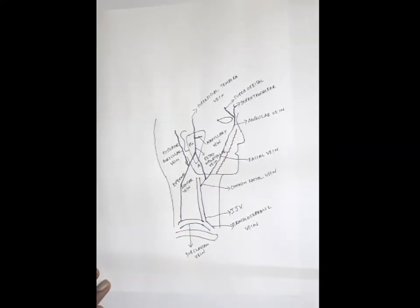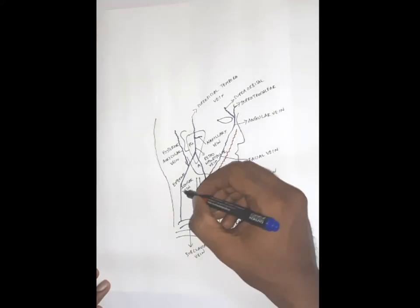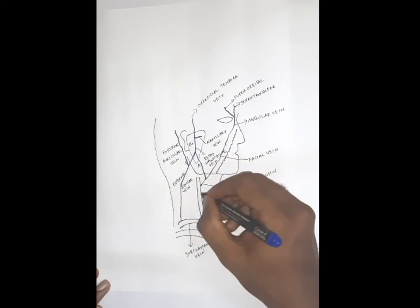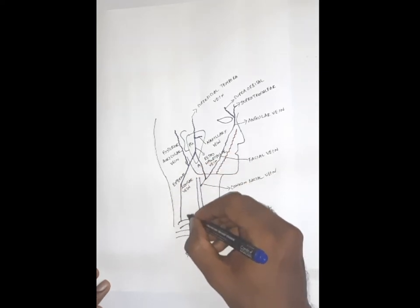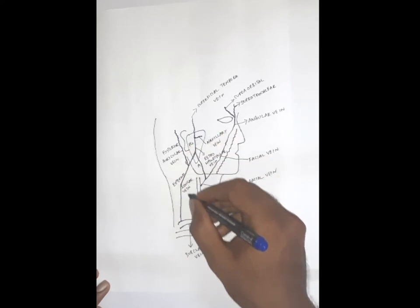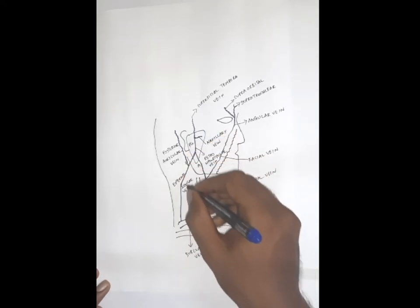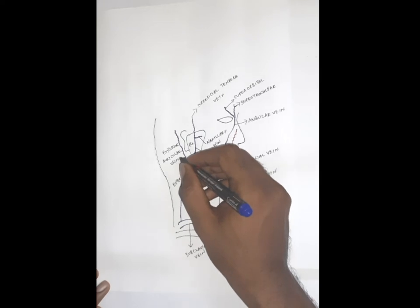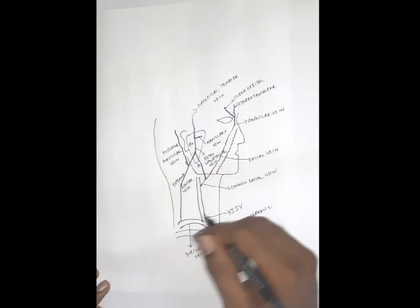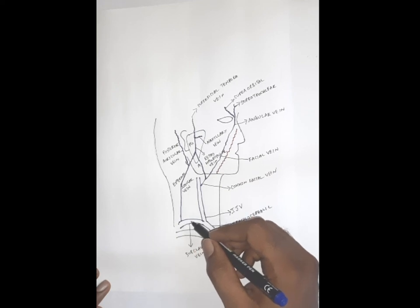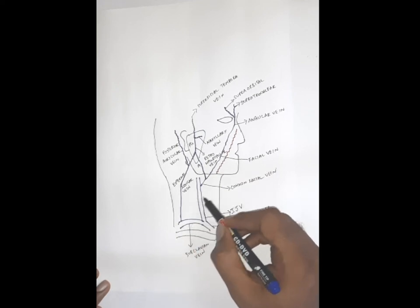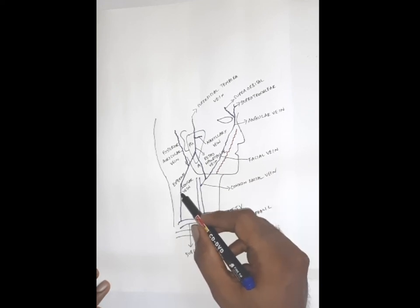The structure dividing the anterior and posterior triangles is the sternocleidomastoid muscle, running obliquely across the neck. The external jugular vein is present behind the sternocleidomastoid, and the internal jugular vein is present in front of it in the carotid triangle. The external jugular is located in the posterior triangle.